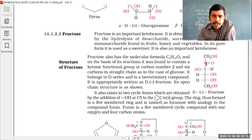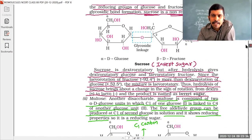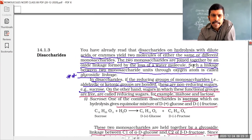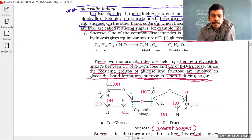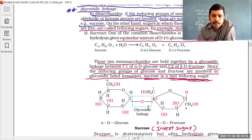For more details on fructose's reducing property via keto-enol tautomerism, please watch the previous video. So to conclude: all monosaccharides are reducing sugars. For disaccharides, our textbook gives three examples: sucrose, maltose, and lactose.